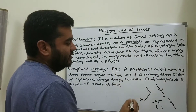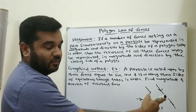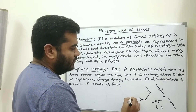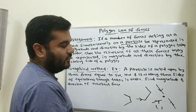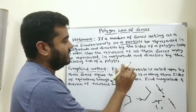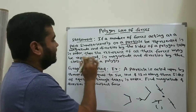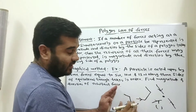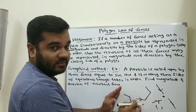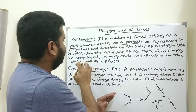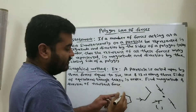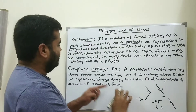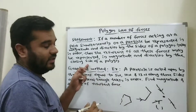These forces are represented by the sides of a polygon — first force, second force, third force — taken in order. Then the resultant of all these forces may be represented in magnitude and direction by the closing side of the polygon.